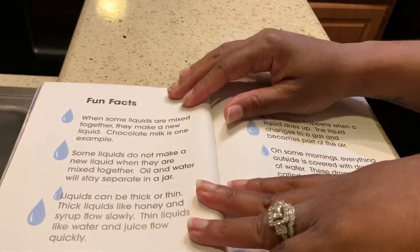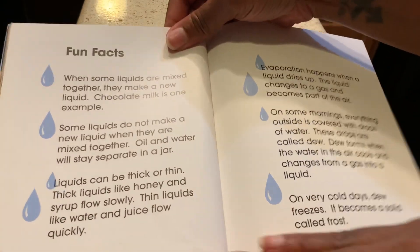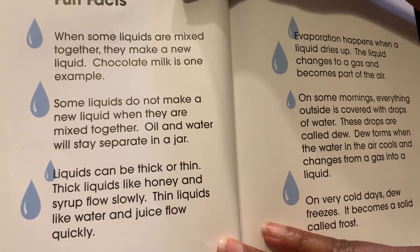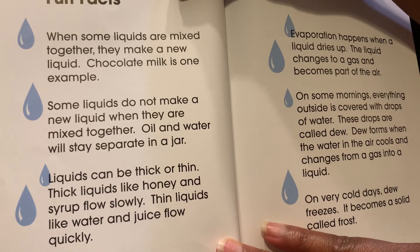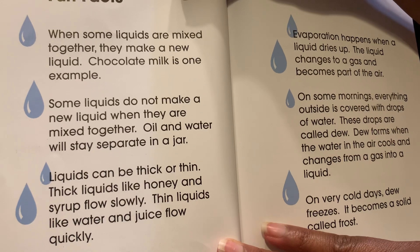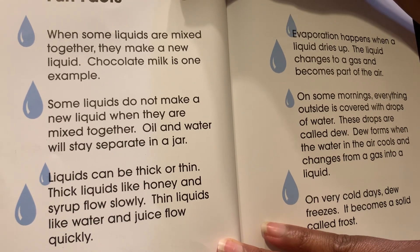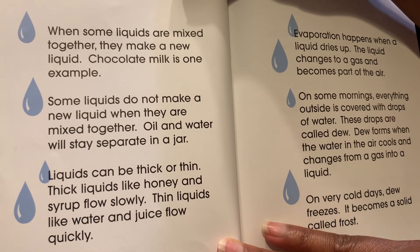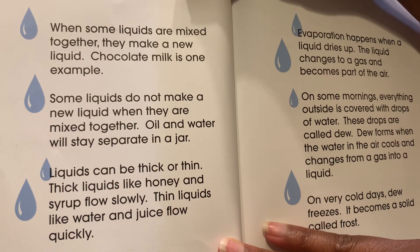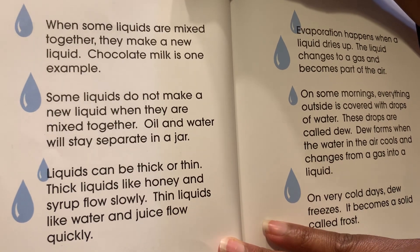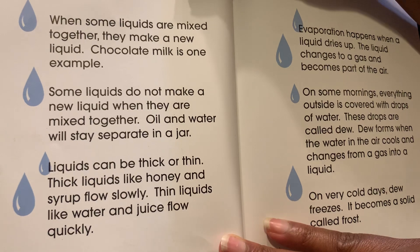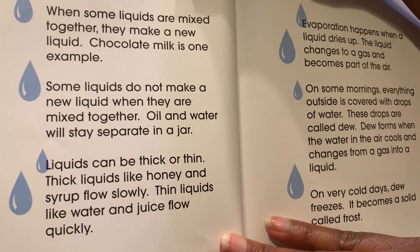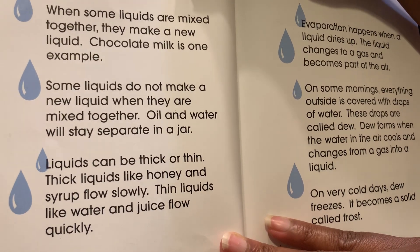Now I want to read some fun facts about liquids. When some liquids are mixed together, they make a new liquid — chocolate milk is one example. If you mix white milk and chocolate syrup, those two liquids make chocolate milk. Some liquids do not make a new liquid when mixed — oil and water will stay separate in a jar. Liquids can also be thick or thin: thick liquids like honey and syrup flow slowly, while thin liquids like water and juice flow quickly.